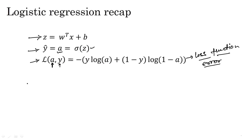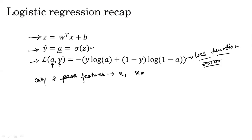In this computation graph we have parameters w and b, and let us suppose we have only two features: x1 and x2. Corresponding to those two features x1 and x2 we have two parameters w1 and w2, and one real number b.